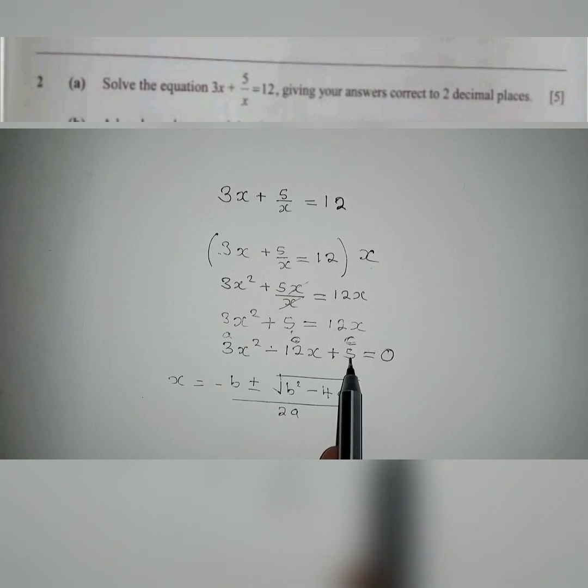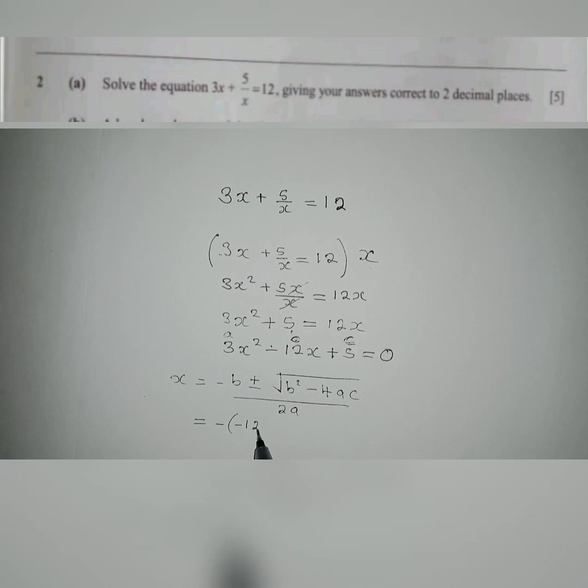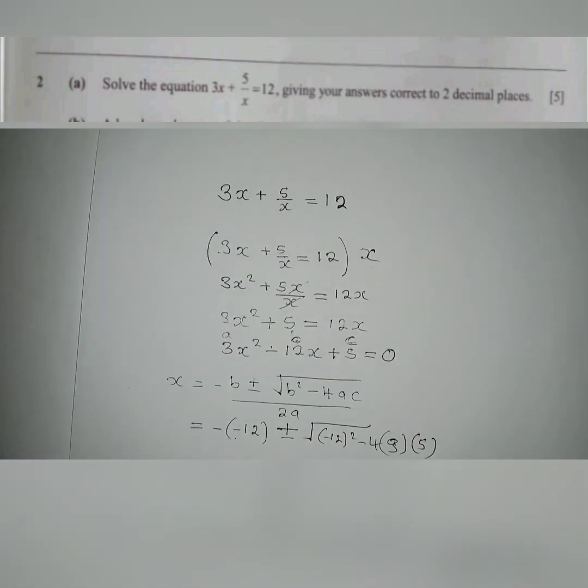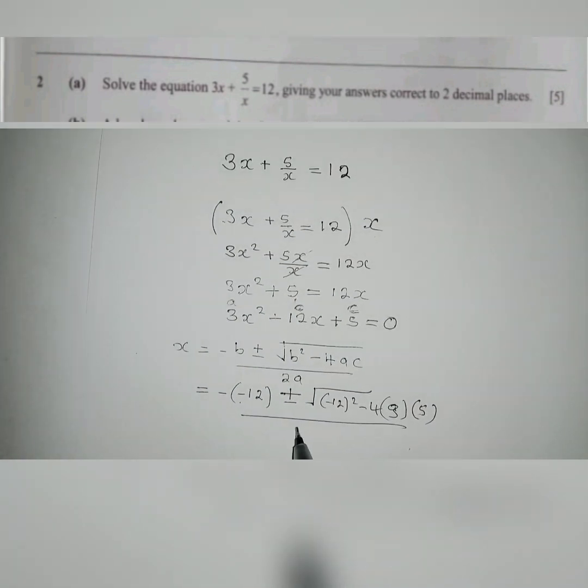We can plug in here: negative 12 (remember to put the brackets because there is a negative already) plus minus root of negative 12 squared minus 4 times our a which is 3 multiplied by our c which is 5, then everything here we divide by 2 times our a which is 3.